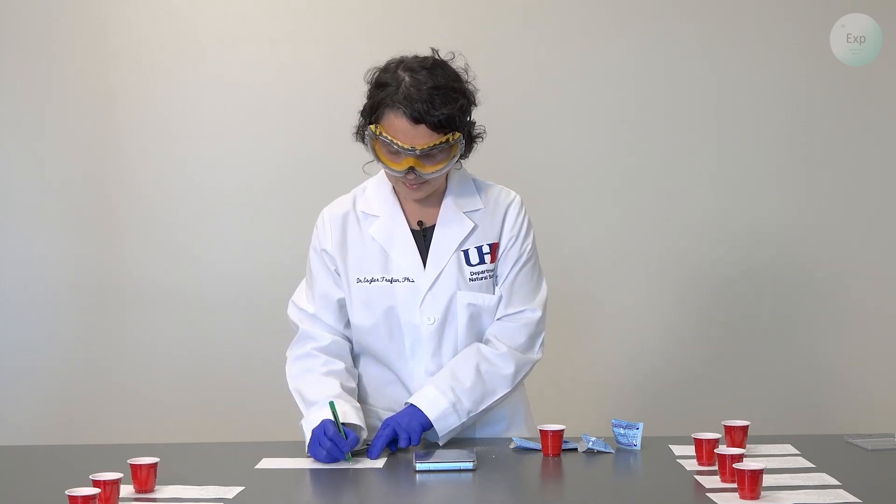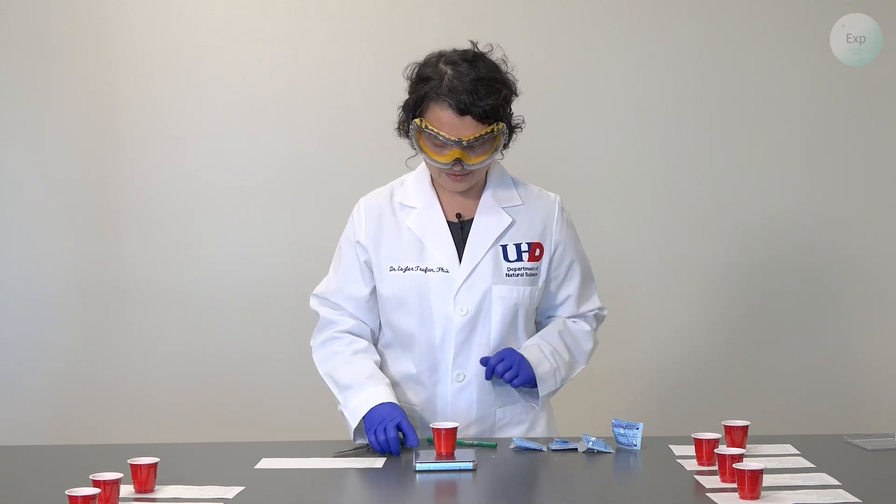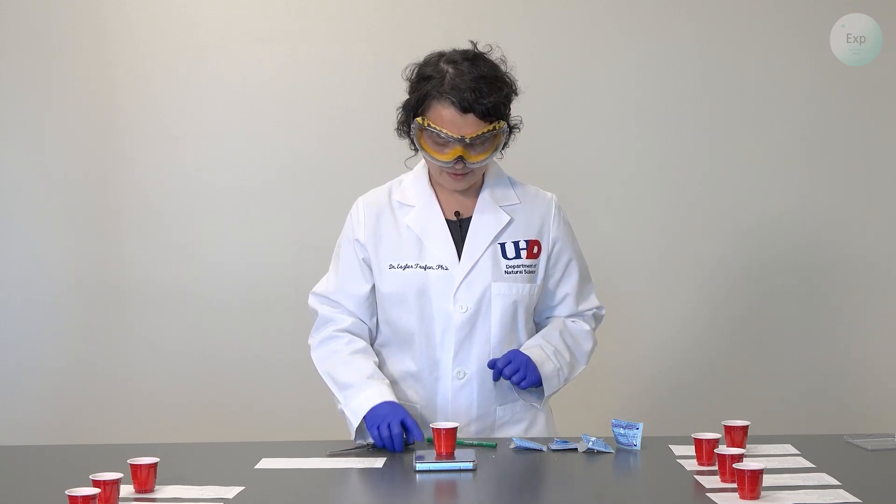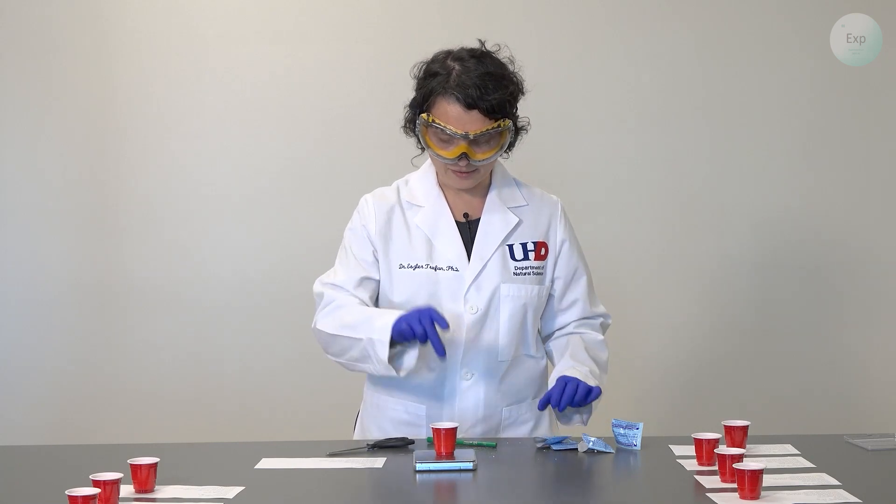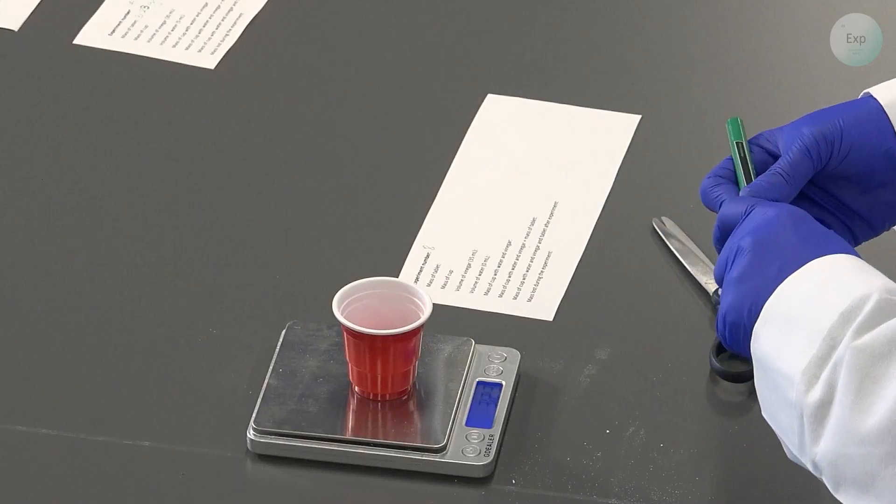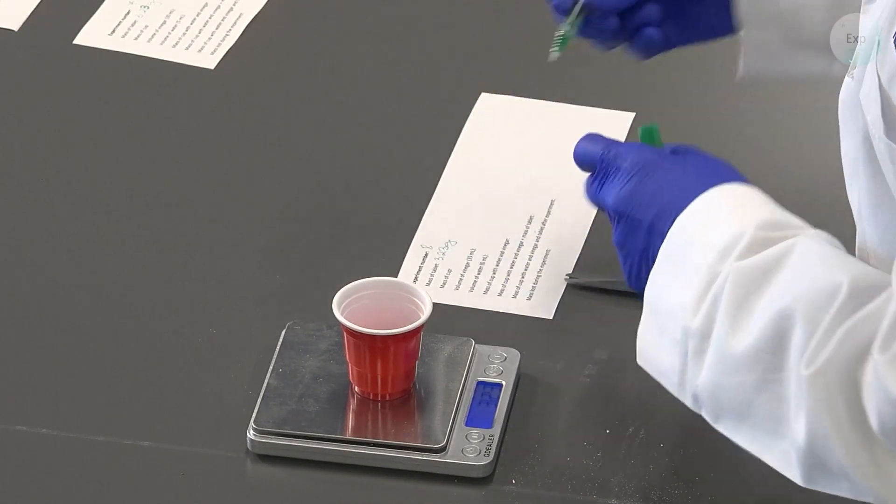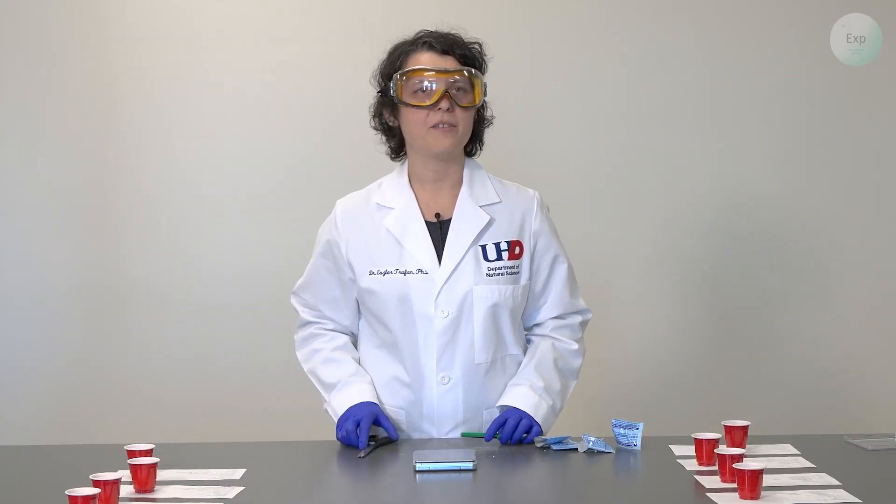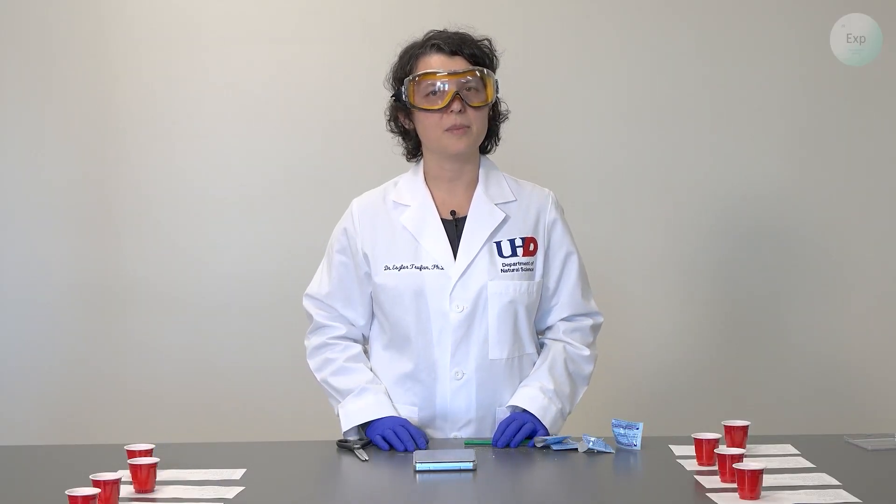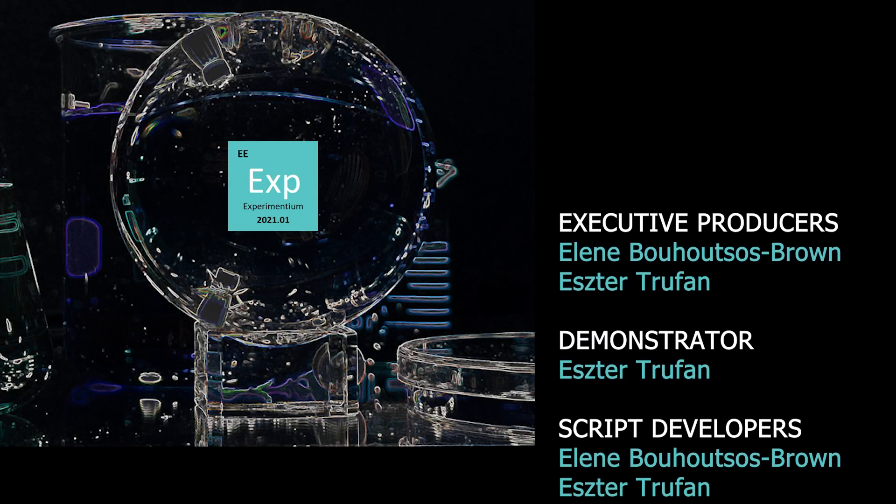For our final experiment, experiment number eight, we're going to place a cup on the scale, tare, and place our final tablet inside the cup. Its mass is 3.23 grams. With all our tablets prepared, we have the first set of measurements for our limiting reactant experiment.